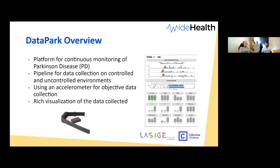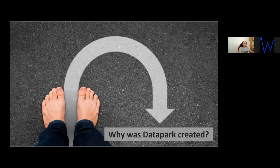DataPark is a platform for continuous monitoring of Parkinson's with two main components: a pipeline for data collection in controlled and uncontrolled environments using an accelerometer for objective data collection, and a rich visualization of all collected data. On the right you can see an example report we produce with all the data processing in a format that's easy for clinicians to understand. The sensor we use is the ActivityAX3.